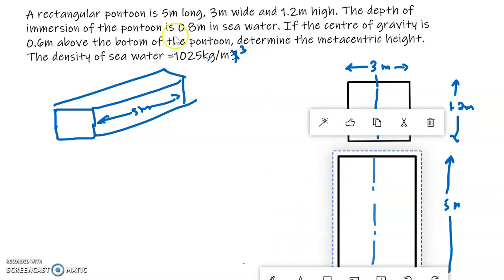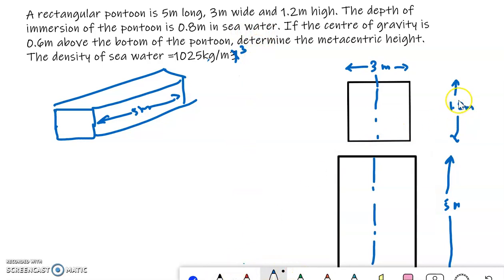Now this pontoon is 0.8 meter in sea water, that means out of this 1.2 meter only 0.8 meter is in water. That means up to this height it is in water, so this height is 0.8 meter.